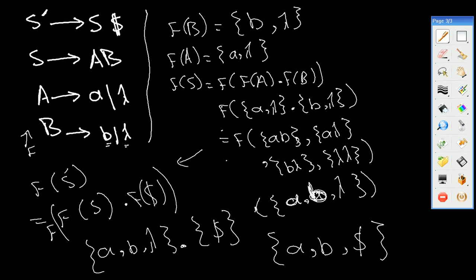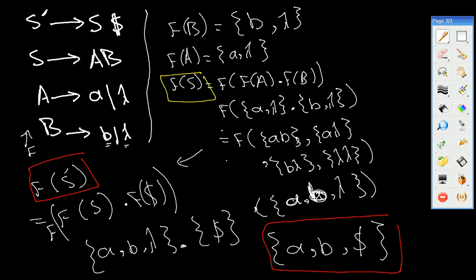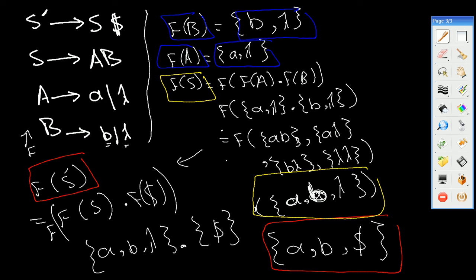So basically the result of calculating FIRST(S') is {A, B, $}. In this example we showed how to calculate FIRST(S'), which is {A, B, $}, FIRST(S) = {A, B, lambda}, FIRST(A) = {A, lambda}, and FIRST(B) = {B, lambda}. In the next tutorial we'll see how to calculate the FOLLOW sets, so stay tuned and don't forget to subscribe. Thank you.